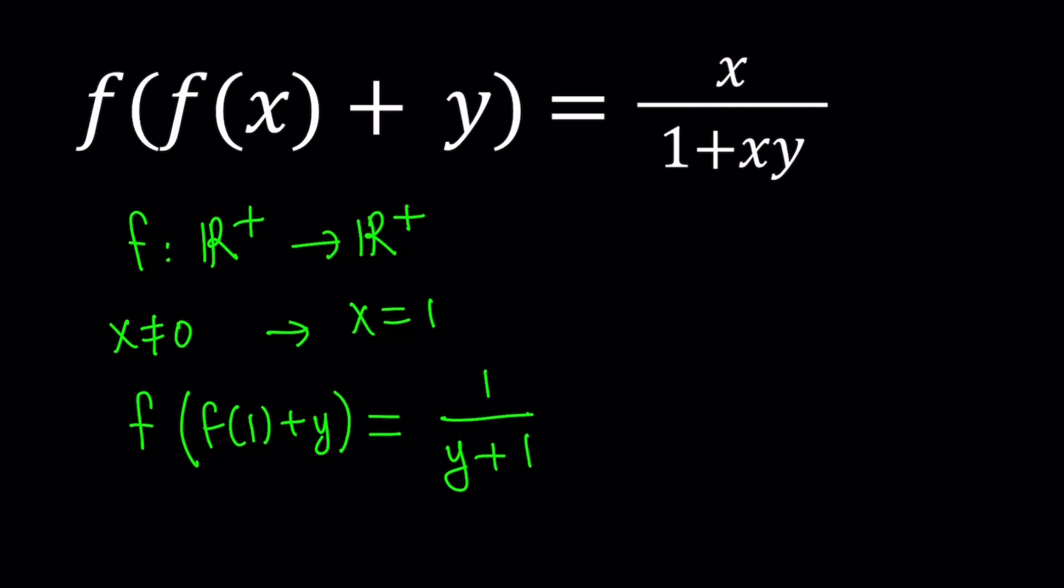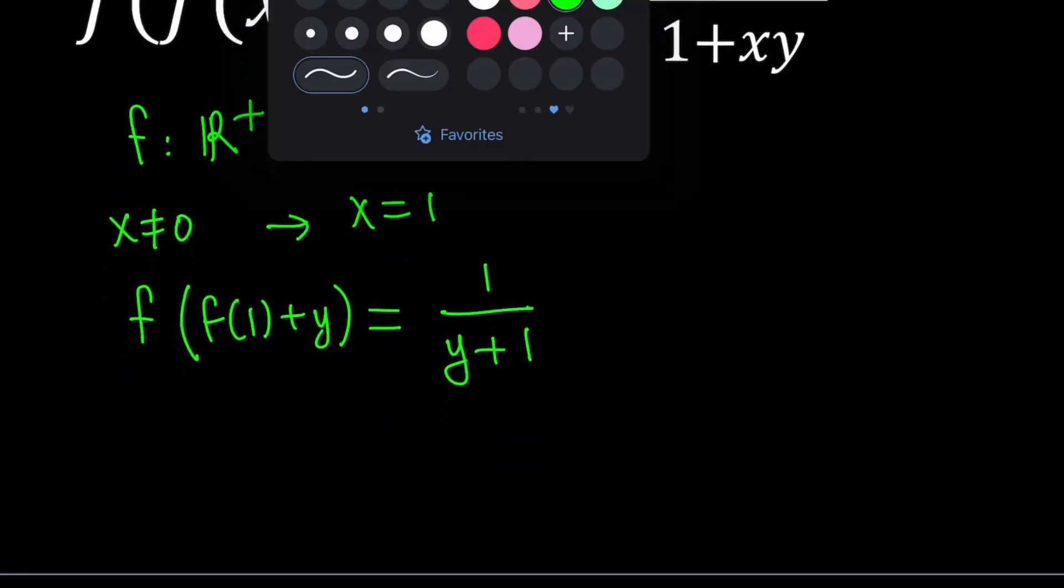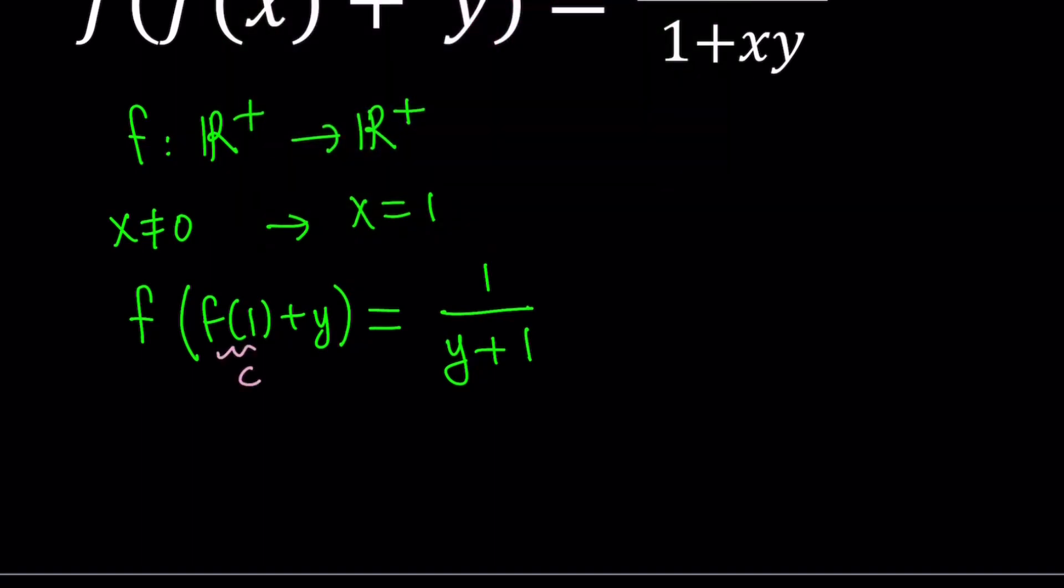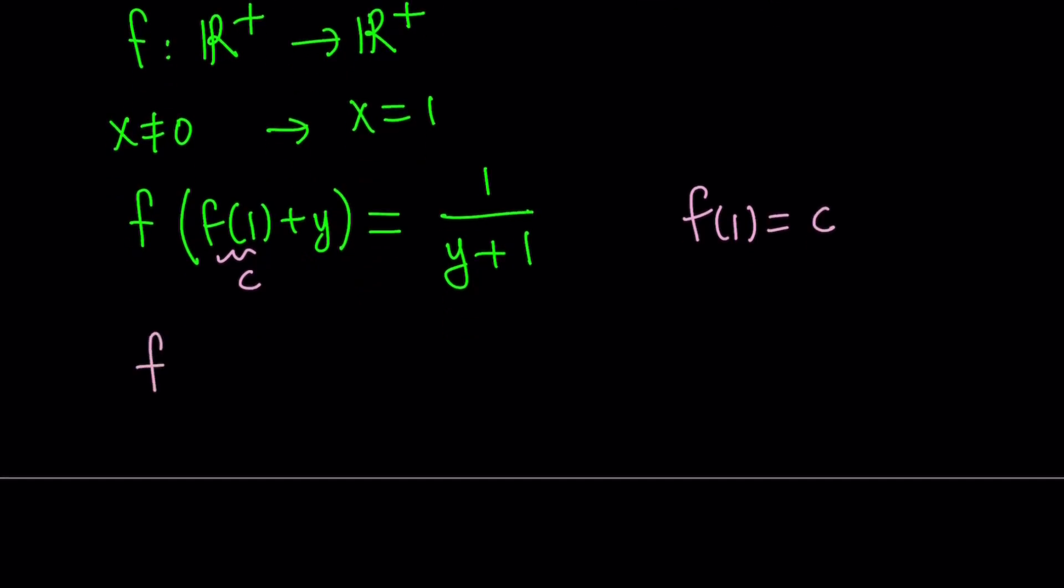Notice that f of 1 is a constant. f of 1 is a constant, so let's go ahead and call that something. How about c? So if we set f of 1 equal to c, then we're going to get a nicer equation. Let's write it this way.